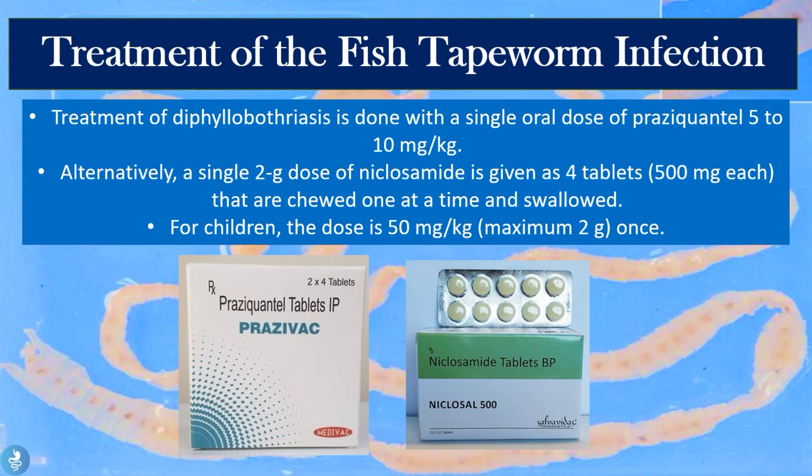The treatment for diphyllobothriasis is a single dose of praziquantel at 5 to 10 milligrams per kilogram of the patient's body weight. Alternatively, a single 2-gram dose of niclosamide can be given as 4 tablets of 500 milligrams each, chewed one at a time and swallowed. For children, the dose is 50 milligrams per kilogram, with a maximum of 2 grams at once.